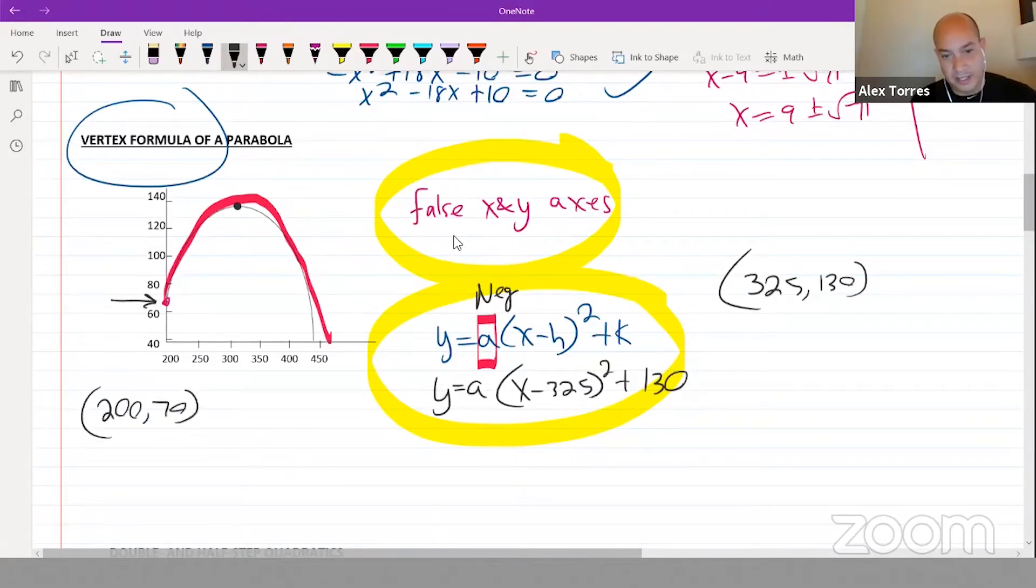And when you plug that in, so y is 70, x is 200. Everything else stays the same. This will allow you to solve for a.